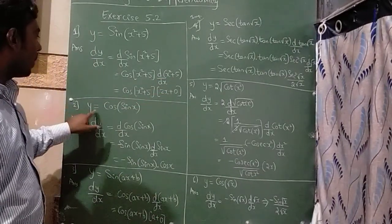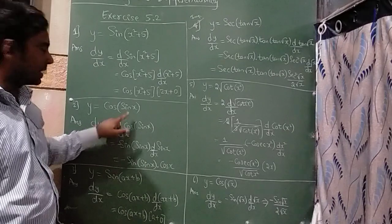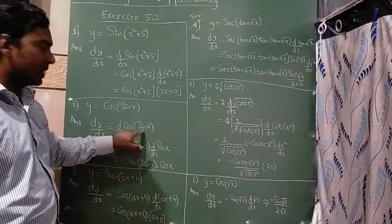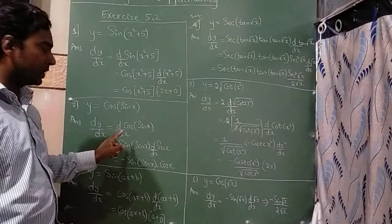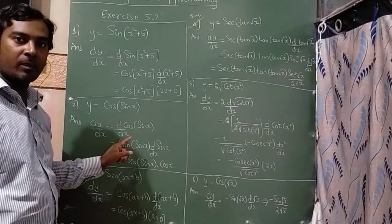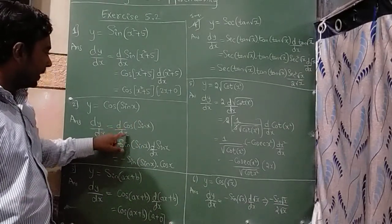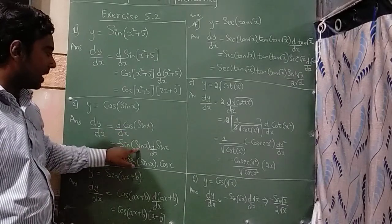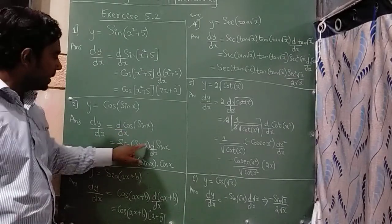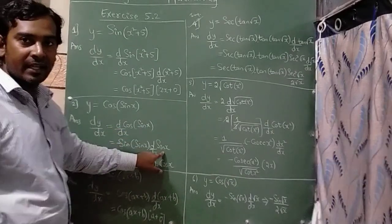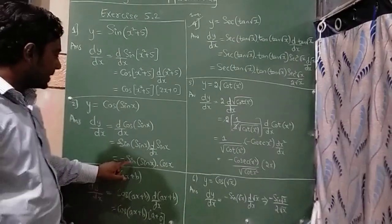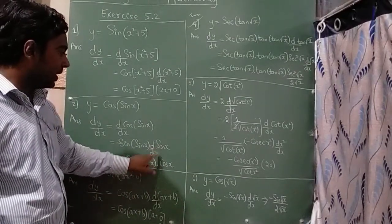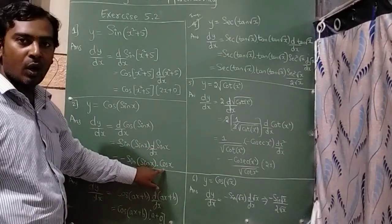The second question is y is equal to cos(sin x). Again dy/dx is d/dx of cos(sin x). We don't have a direct formula for this, so again we are going to apply chain rule. d/dx of cos is minus sin, and by chain rule I have to write d/dx of sin x. So the result is minus sin(sin x) multiplied by cos x, since d/dx of sin is cos x.